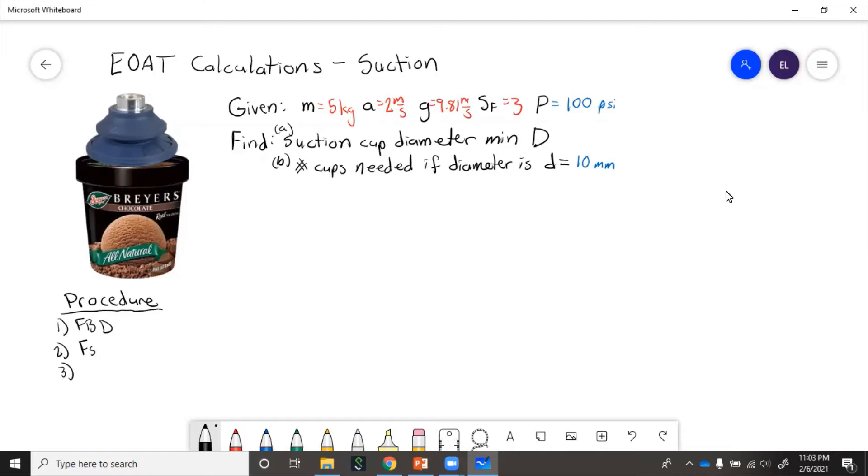Step three is use that suction force along with the safety factor to calculate cup diameter. And then step four is if we need or have cups of a given diameter, then calculate how many are needed.